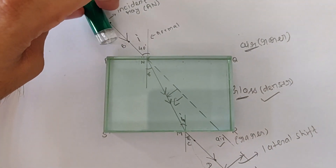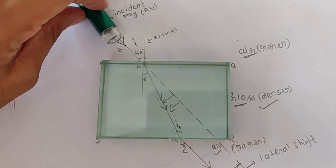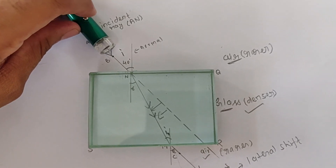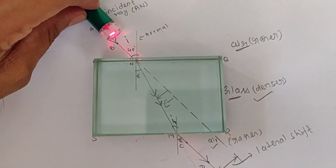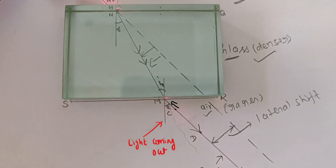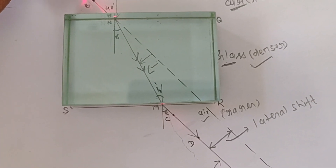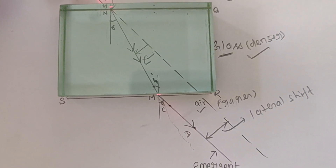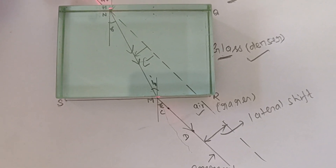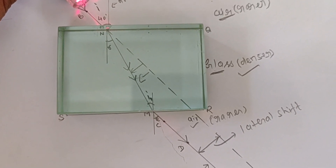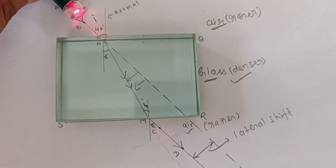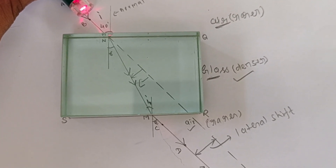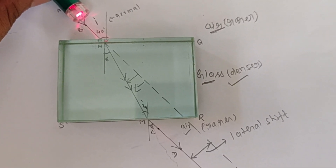In the last part of this experiment, I want to show you with the help of a laser light. I'm keeping the laser light at the incident ray and you can see the light coming exactly to the emergent ray point — not towards the dotted line. This proves how refraction occurs and how light gets refracted. Thank you so much, guys.